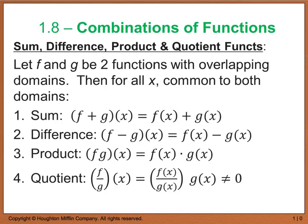As a general rule of thumb, when we're taking two functions and combining them, we have four properties to look at. If we take two functions f and g and we either add or subtract them, we're going to get f(x) plus g(x), or f(x) minus g(x). If we multiply, then we have f(x) times g(x). And if we divide, we have f(x) divided by g(x), with the restriction that g(x) cannot equal zero.